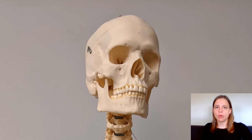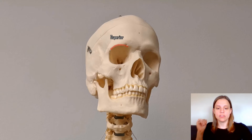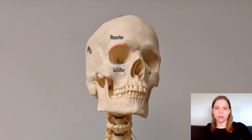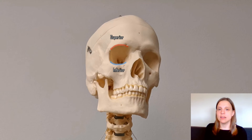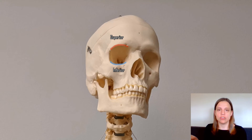You should also remember that these terms are comparative. So if I say that this is the superior border of my eye socket, then this would be the inferior border of my eye socket. Just because it's on the head doesn't mean that it can't be inferior — we're just comparing it to a point on the head which is higher.